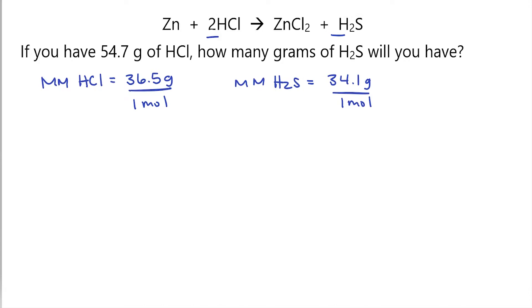So what I have is a two in front of HCl and nothing in front of H2S. What that signifies is that there's just one H2S. So the relationship I have is that for every two HCl, I have one H2S, or for every one H2S, I have two HCl. Now, which fraction we use will depend upon what we're trying to accomplish in the problem.